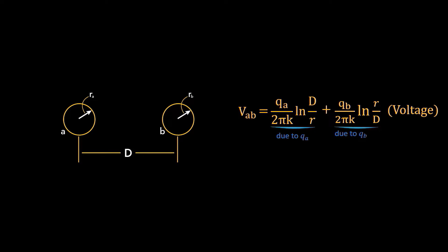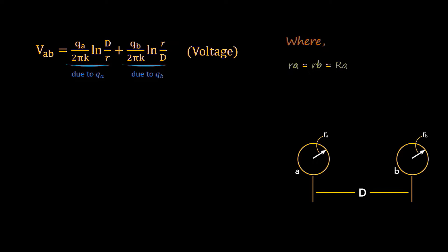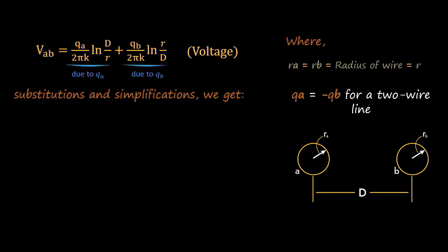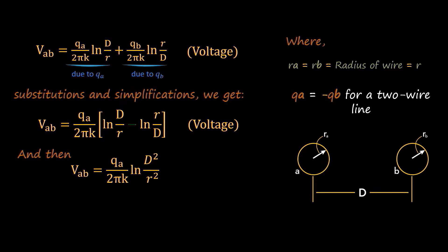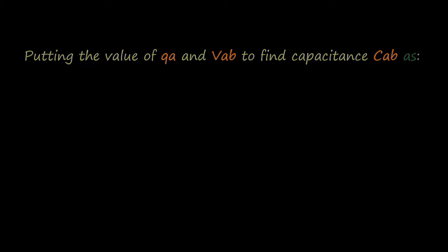The equation for voltage comes out as vab. The values of Ra and Rb are both equal to the radius of the wire, which is denoted as r. And since qa is equal to minus qb for a 2 wire line, after some substitutions and simplifications, we get vab equal to qa over 2 times pi times k bracket open natural log of d over r minus natural log of r over d bracket close. After further solving, we get vab equal to qa over 2 times pi times k into natural log of d square over r square. As we have calculated the value of capacitance, charge and voltage, we can put the value of qa and vab for finding capacitance cab as cab equal to qa over vab. On putting the value of vab, cab becomes pi times k over natural log of d over r.